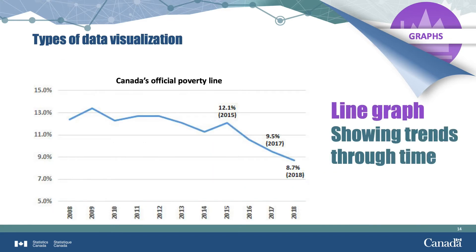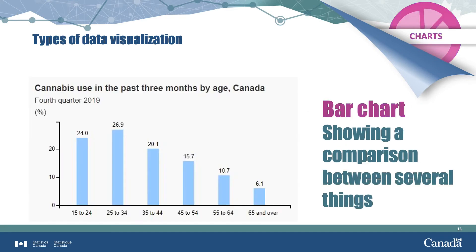A line graph is a good way to show how something changes over time. This one shows how Canada's official poverty line has been declining in recent years, from 12.1% in 2015 to 8.7% in 2018. A bar chart is better when you want to compare different groups of things. Here, we compare the use of cannabis among Canadians by age group. The chart clearly shows that cannabis use is higher among those in the younger age groups compared with older age groups.